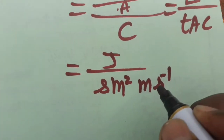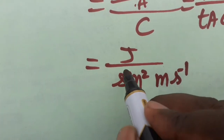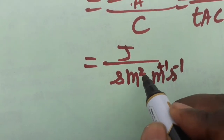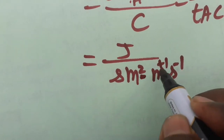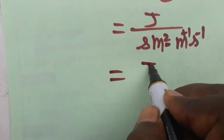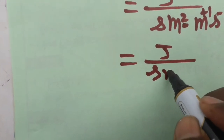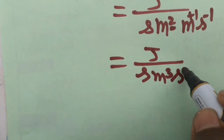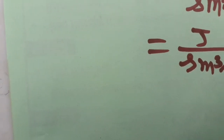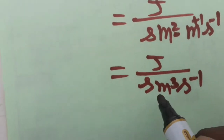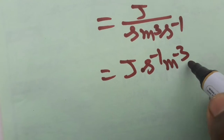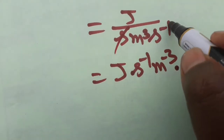Now I am taking all the terms from the denominator to the numerator. Meter squared times meter becomes meter cubed. So we have joule × second × meter³, and second to the power minus one. Taking all to numerator gives joule × second⁻¹ × meter⁻³, then second⁺¹ and second⁻¹ cancel.